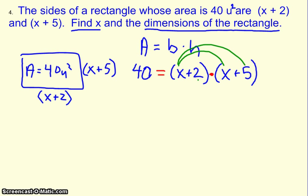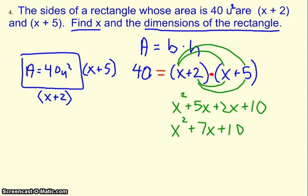Remember first, outside, inside, last. So we're going to have x squared plus 5x plus 2x plus 10, which simplifies to x squared plus 7x plus 10. And all along, that equals 40.